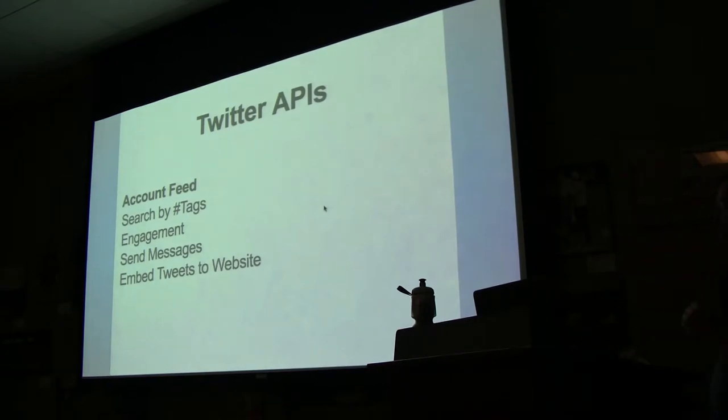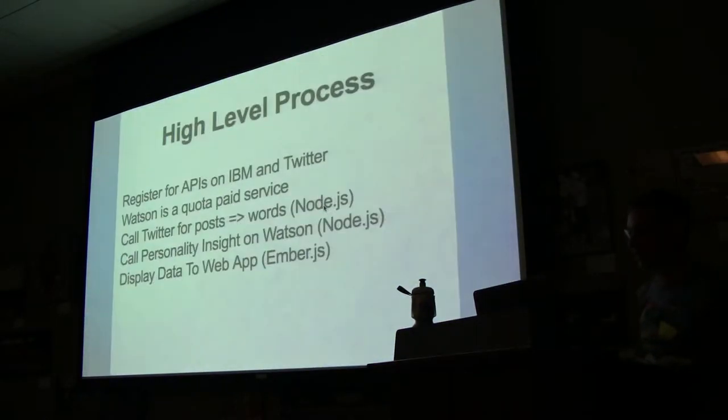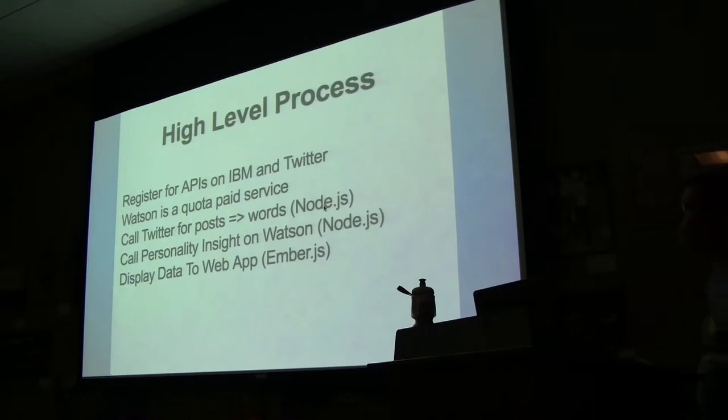When I get the response back, there's four sections: consumption preferences like do you care about safety in cars, what's your needs, personality, and your values. The Twitter API has the account feed - that's what I'm grabbing for the source to send to Watson. But you can also search by tags, how engaged they are on Twitter. On a high-level process, you have to register for both APIs on IBM and Twitter. IBM's a paid service - you get so many free, but after that you start paying like two cents or something.